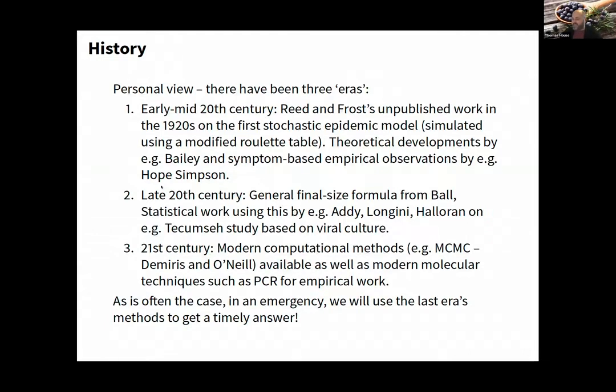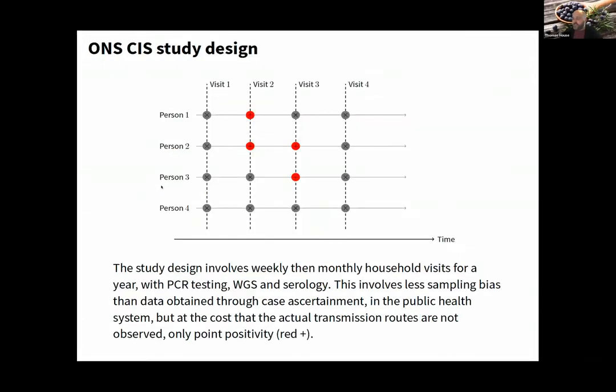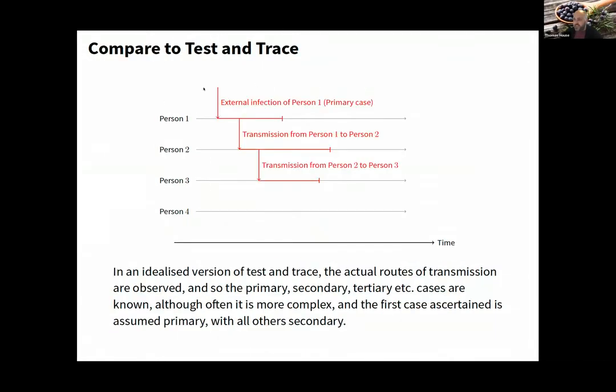This is a schematic of the ONS design with repeated visits testing everyone in the household. There's less sampling bias but it's less timely. In idealized test and trace, you catch each person at the event, see who was first, and observe infection starts, not just a point in time. You can find infections quite late.